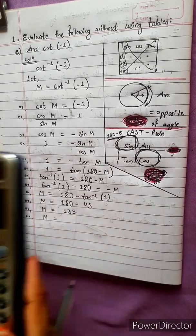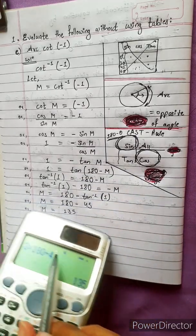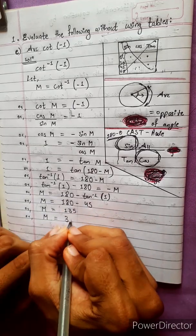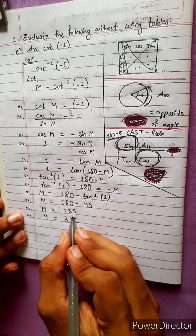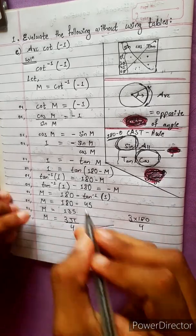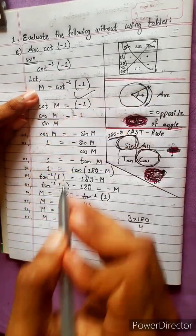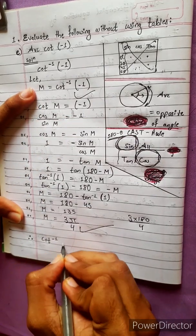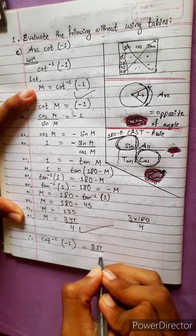Converting 135° to radians: 135 equals 3 times 180 divided by 4, which is 3π/4. Therefore m equals cot inverse of minus 1 equals 3π/4.